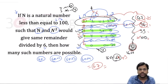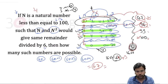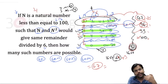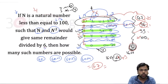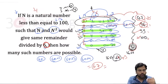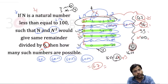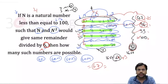The answer is 67. This is one of the most conceptual questions. The key insight is: if a natural number has a property involving a divisor, you just need to work on numbers 1 up to that divisor. If the divisor is 6, work on 1 to 6; if it's 8, work on 1 to 8.